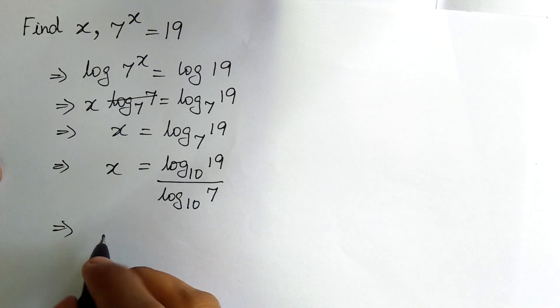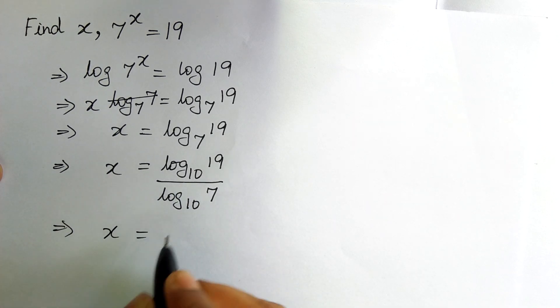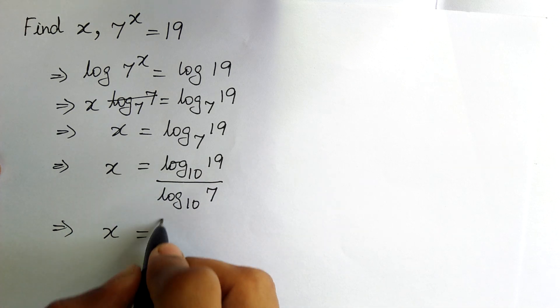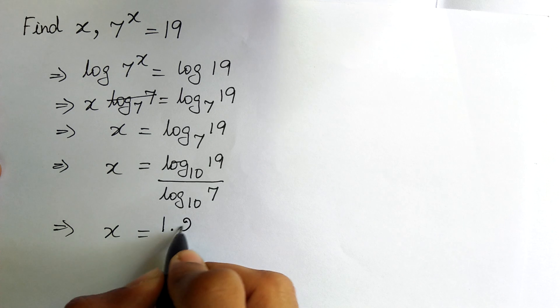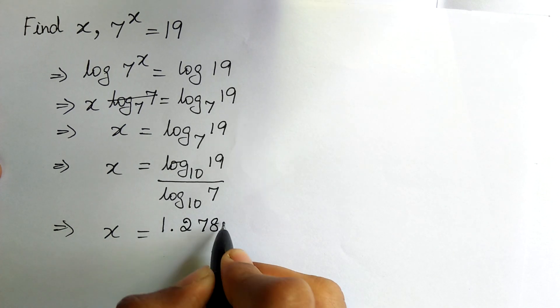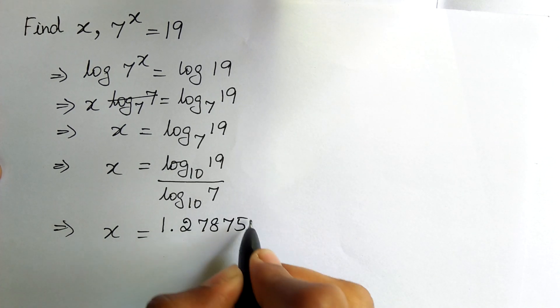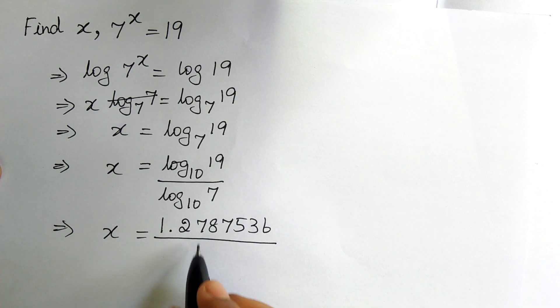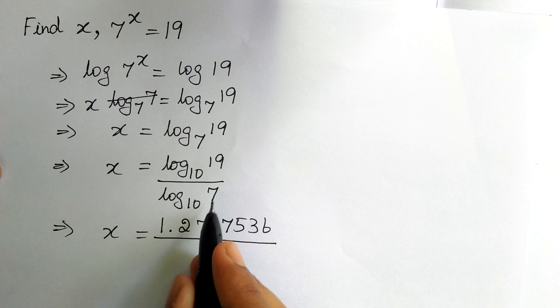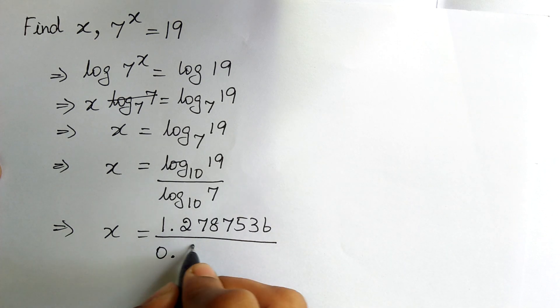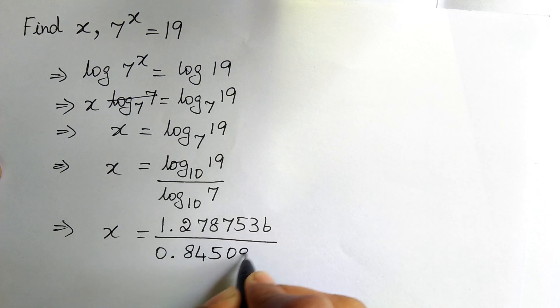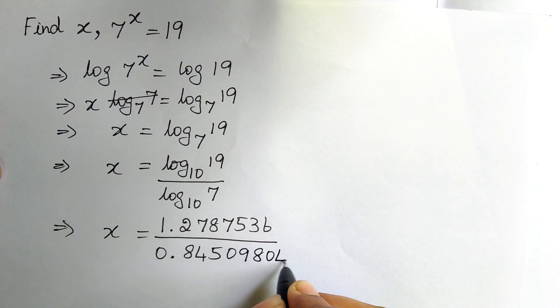Now, we can easily calculate this. x is equal to log to the base 10 of 19. The value is 1.2787536 divided by log to the base 10 of 7. The value is 0.84509804.